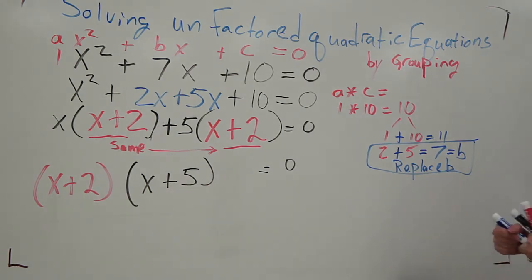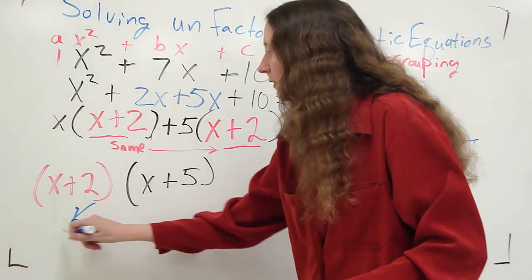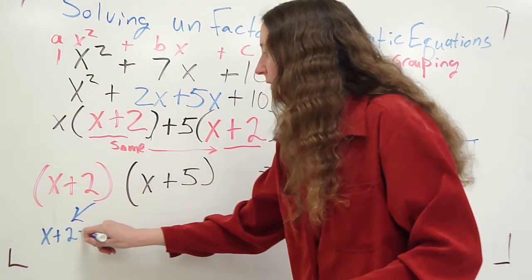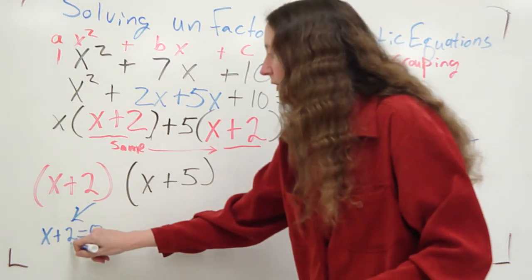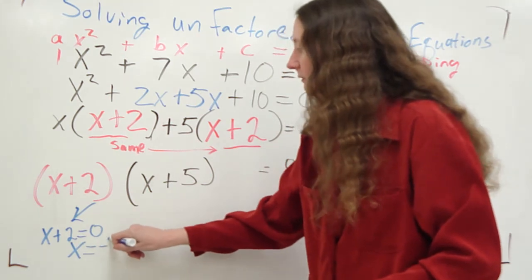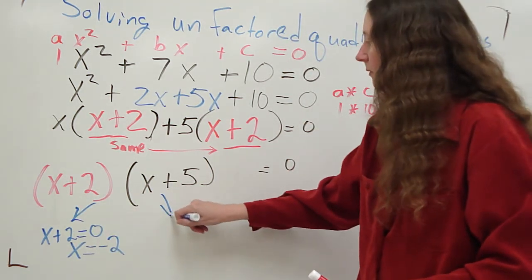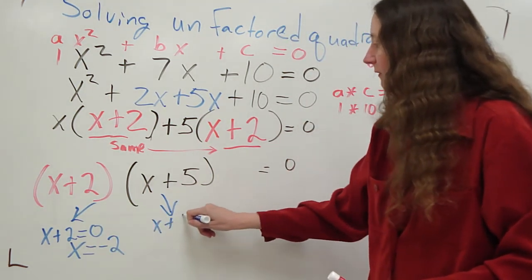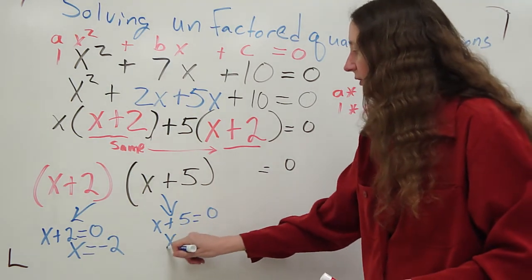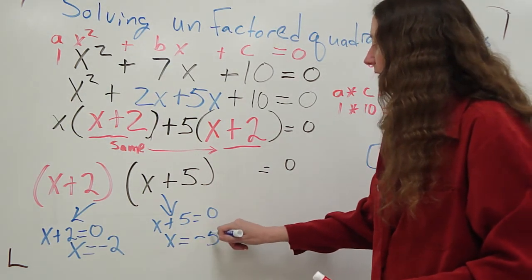I now split this up into two groups. x plus 2 equals 0, so that x equals negative 2. x plus 5 equals 0, so that x equals negative 5.